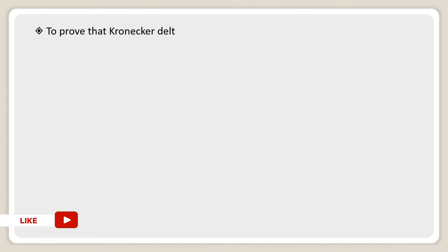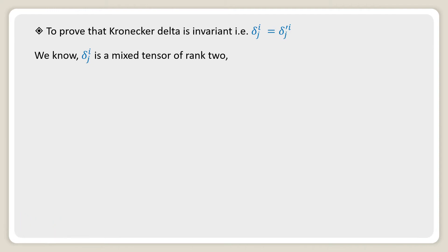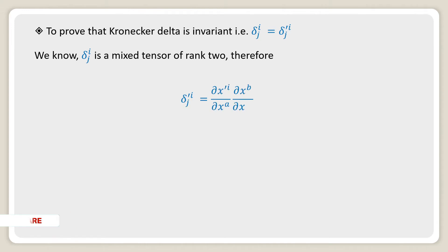To prove that Kronecker delta is invariant, that is delta i^j is equal to delta'^i_j. We know delta i^j is a mixed tensor of rank 2. Therefore delta'^i_j can be written as del x'^i divided by del x^a into del x^b divided by del x'^j into delta a^b.